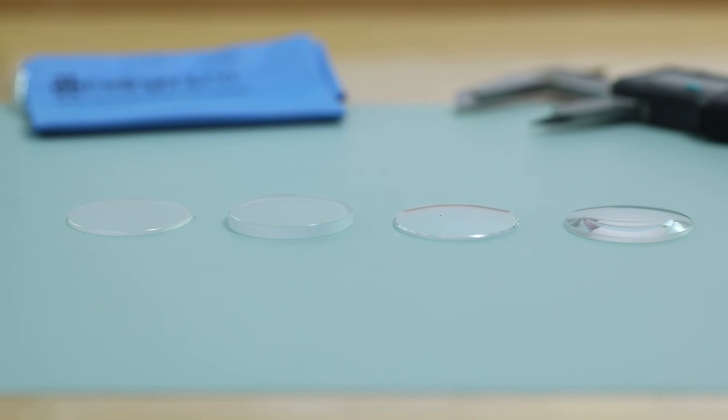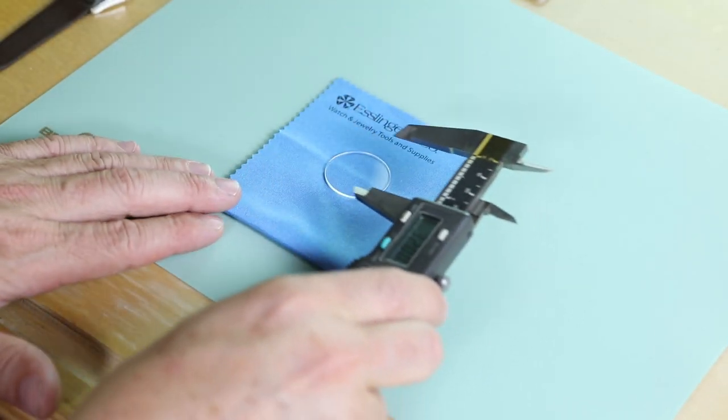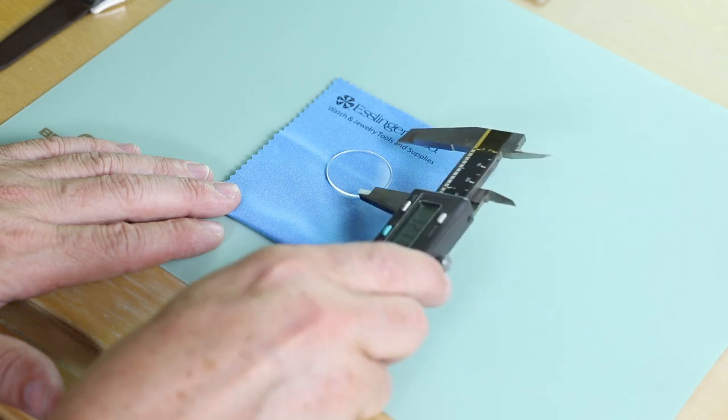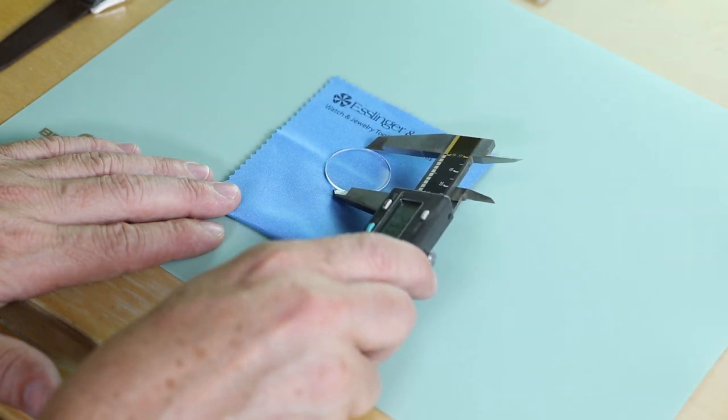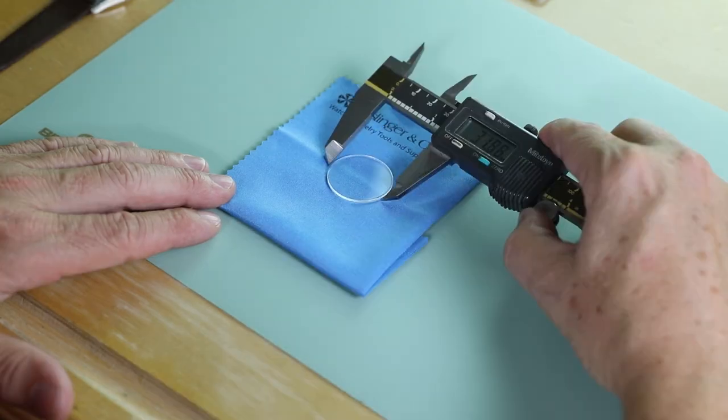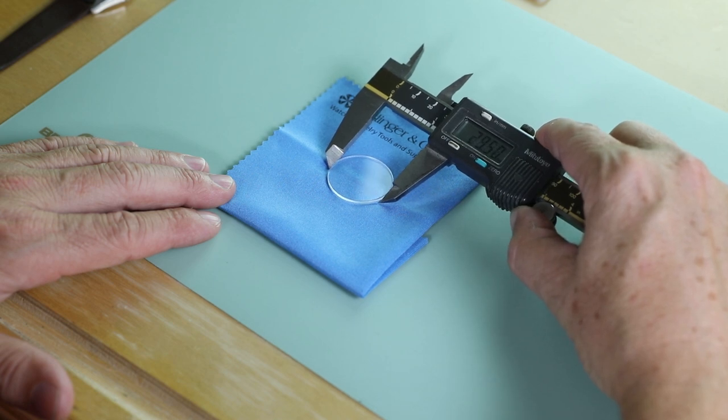If you already have a crystal on hand, the process is simple. Just measure the diameter of the crystal to obtain the proper size. Measure in two to three places to confirm the size and round your measurement to the nearest one-tenth of a millimeter.